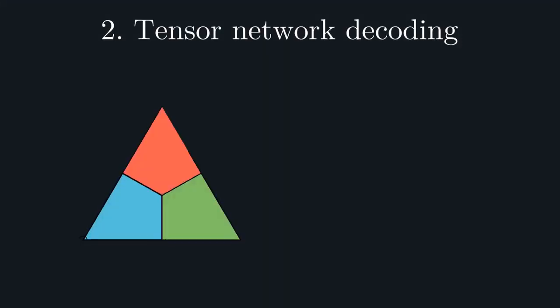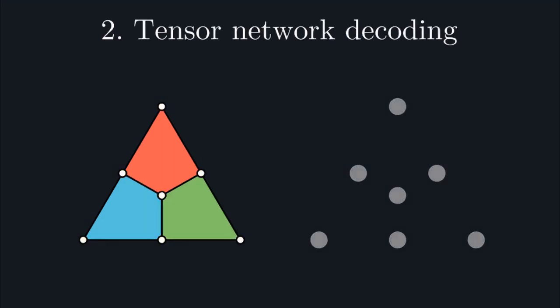The Steane code consists of seven qubits arranged into three faces. For this code, we have a tensor for each qubit, as well as a tensor for each of the stabilizer generators, which live on a face. As you can see, the tensor network is naturally imbued with a connectivity structure very strongly related to that of the original code.